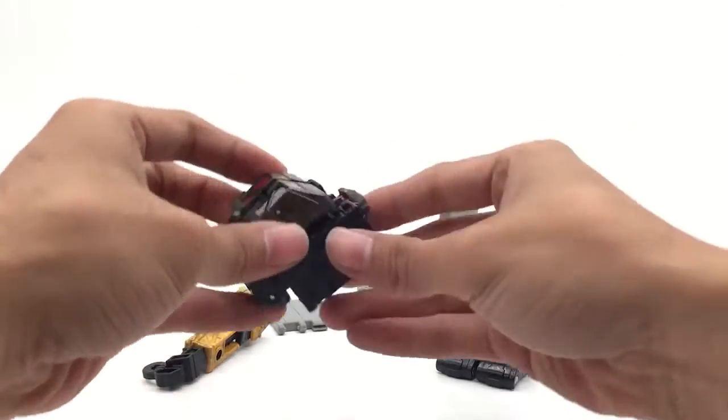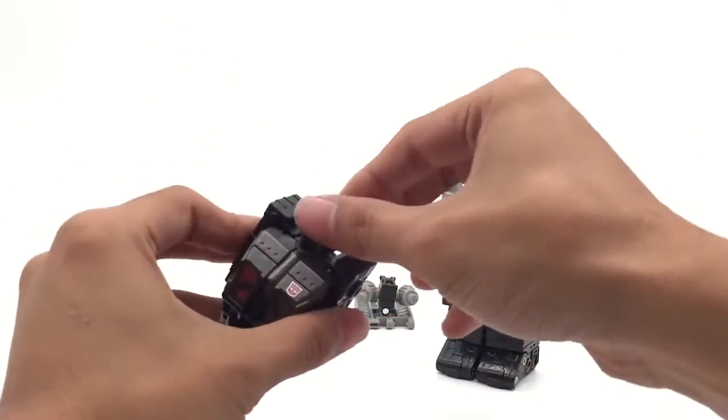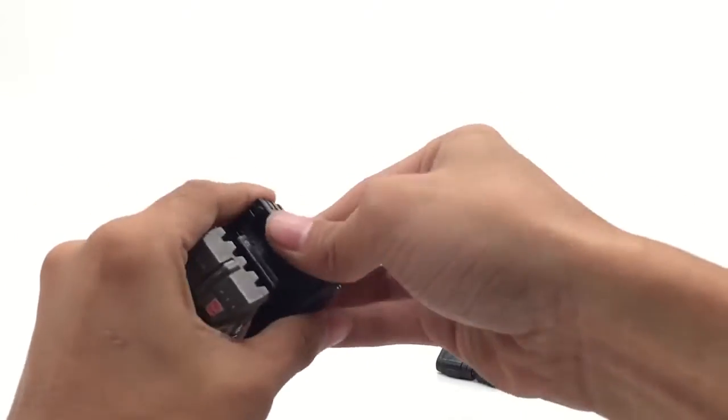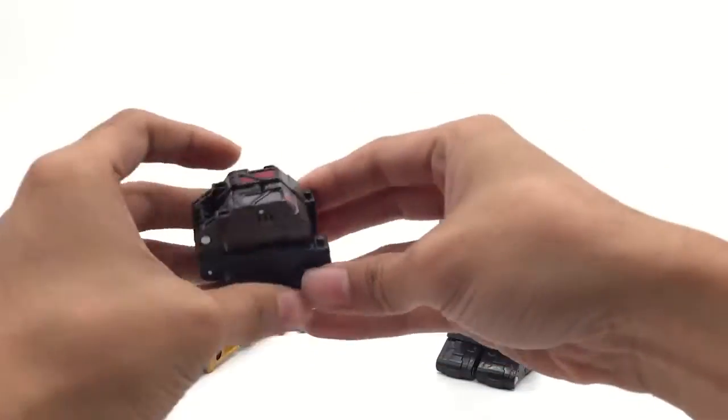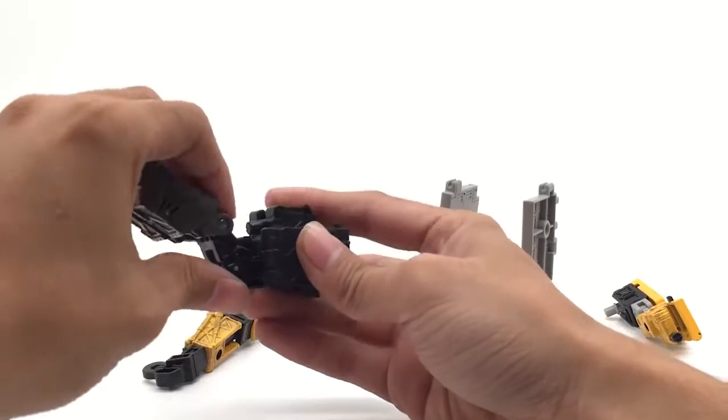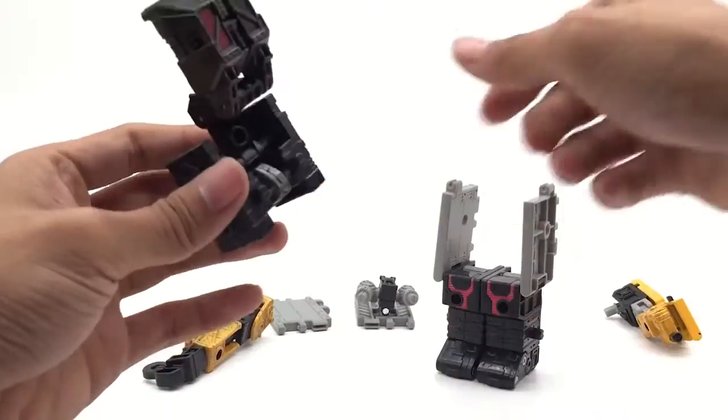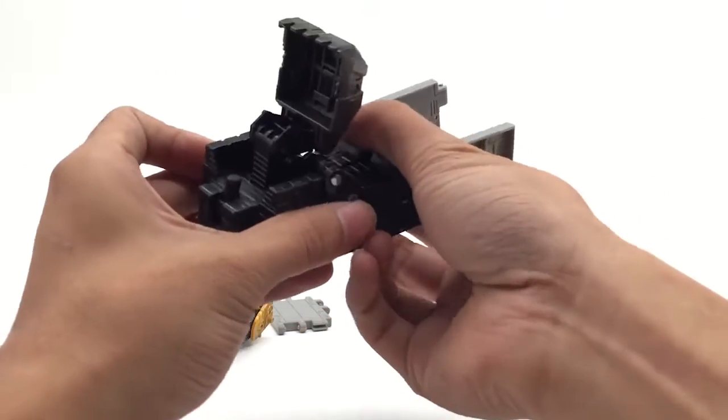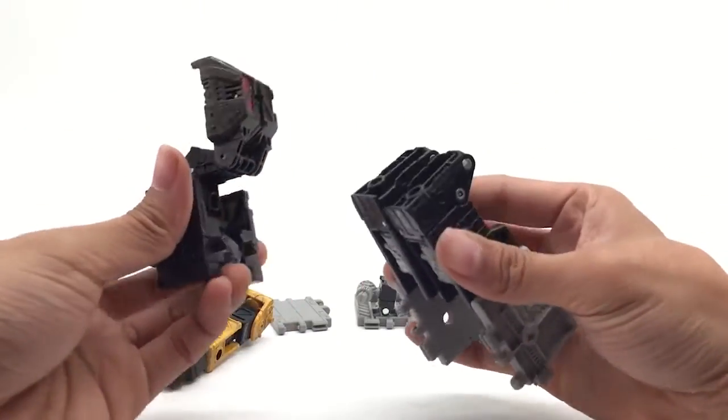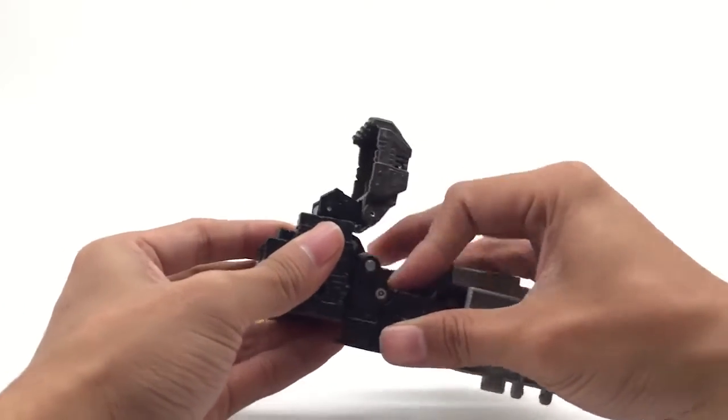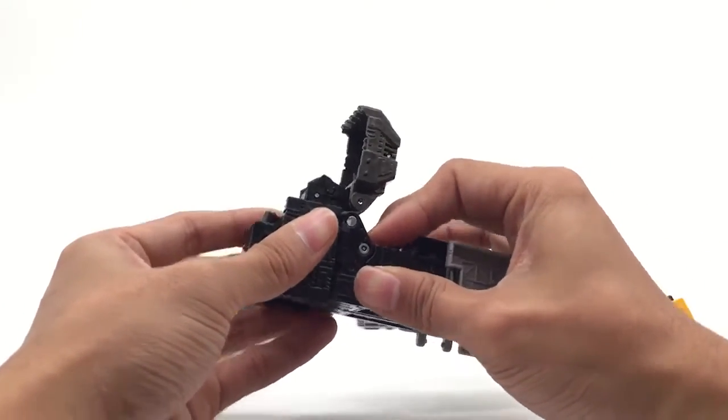And for this piece, what you gonna do is you wanna turn the head and hide it away like that. And open this shovel thing. This chest looks like a shovel. You gonna connect them here, two holes, two pegs. Pack them in, pack them in, like that.